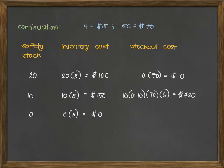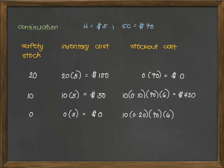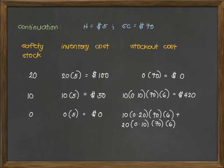Kapag naging 60 yung ating demand, we have 10 units short. So: 10 units short at 20% probability, multiplied by $40 stock out cost, then multiplied by 6 orders per year. Plus, kapag naging 70 naman yung ating demand, 20 na yung units short, and the probability is 10% or 0.1, again multiplied by the stock out cost and the number of orders per year. We have a total stock out cost of $1,680. The full formula is shown to demonstrate the actual computation.